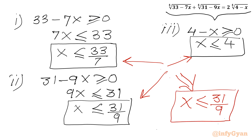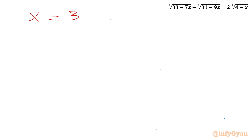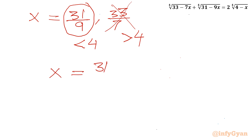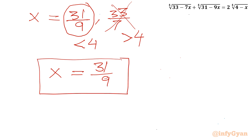Our two candidate solutions were x equals 31 over 9 and x equals 33 over 7. Since 33 over 7 is approximately 4.714, which is greater than 4, it violates the domain conditions and must be rejected. We accept only x equals 31 over 9 as our final real solution, where equality holds.